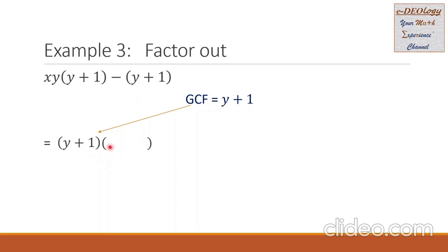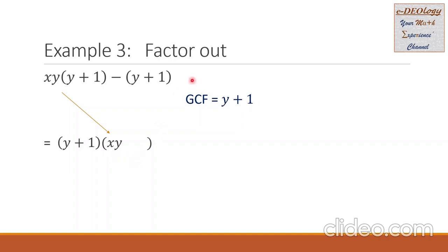Since we have two groups, we expect two terms inside the grouping symbol. For the first term, the first group is divided by the GCF, and the answer is xy. For the second term, we divide the second group by the GCF, giving us negative 1. Therefore, the factors are y plus 1 times xy minus 1.